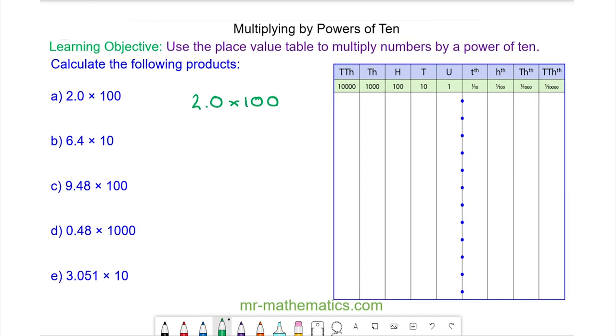We have two units, 0 tenths, and because we're multiplying it by 100, every digit moves to the left by two places. So the 2 moves into the hundreds column, the 0 tenths moves into the tens column, and here we have a placeholder which moves into the units column. So 2.0 multiplied by 100 is 200.